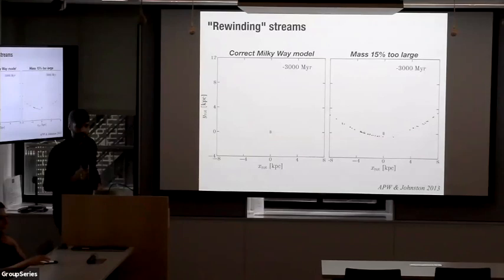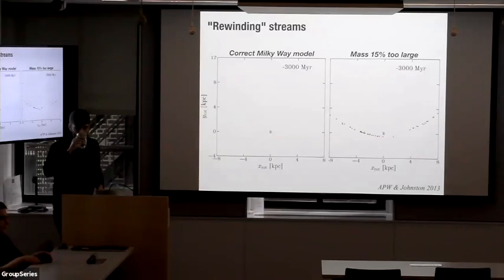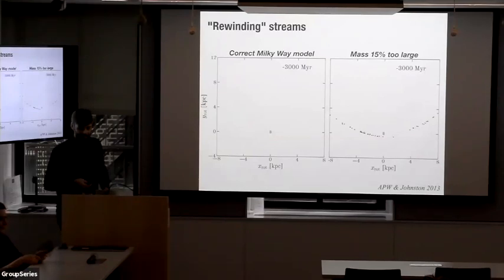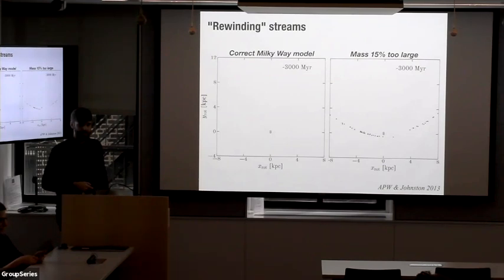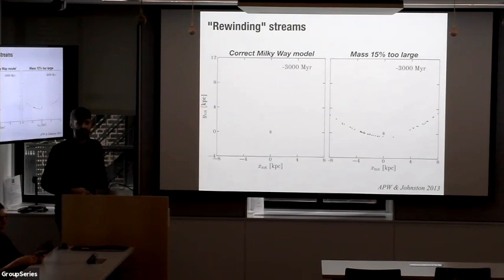[Question from audience]: Is that robust to numerical issues, given that numerical systems are chaotic? If you get your starting snapshot slightly wrong and integrate it backwards, you don't get convergence. [Speaker]: Agreed — we're in toy world right now, yes. I'll come back to exactly that point later on.